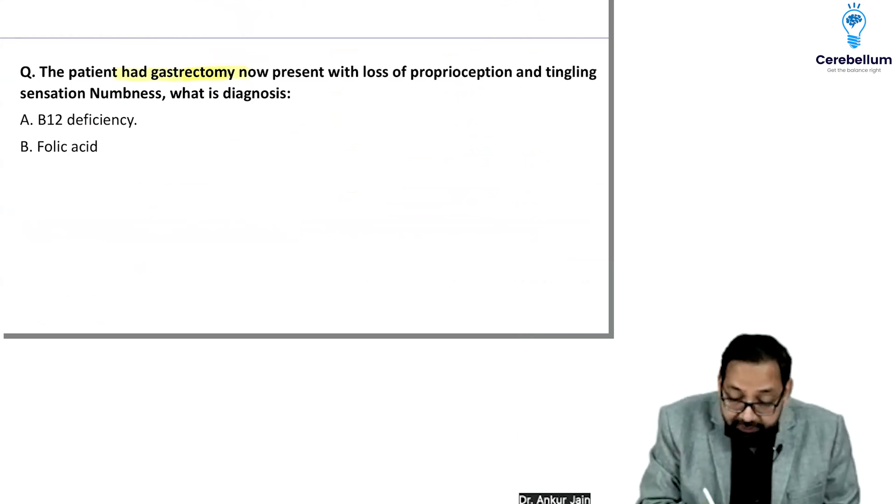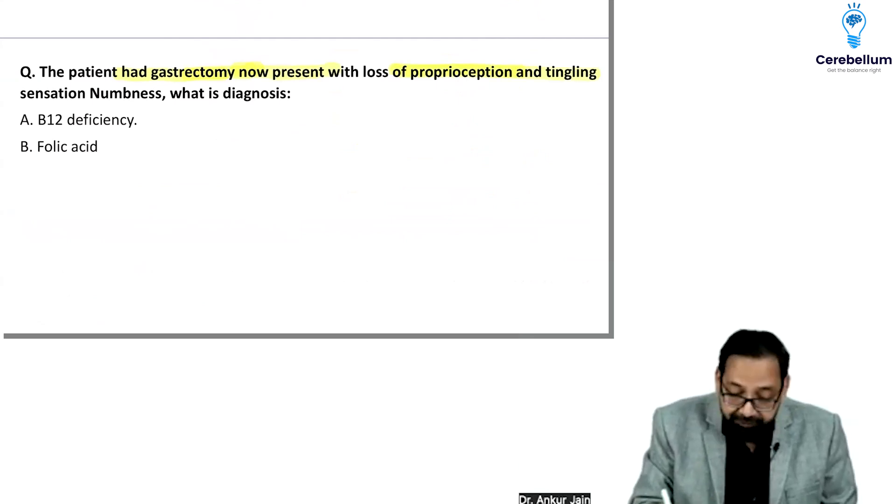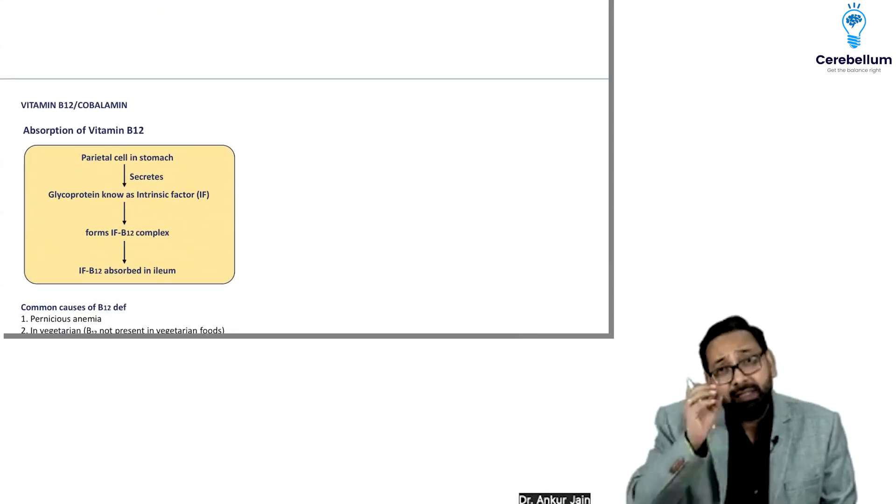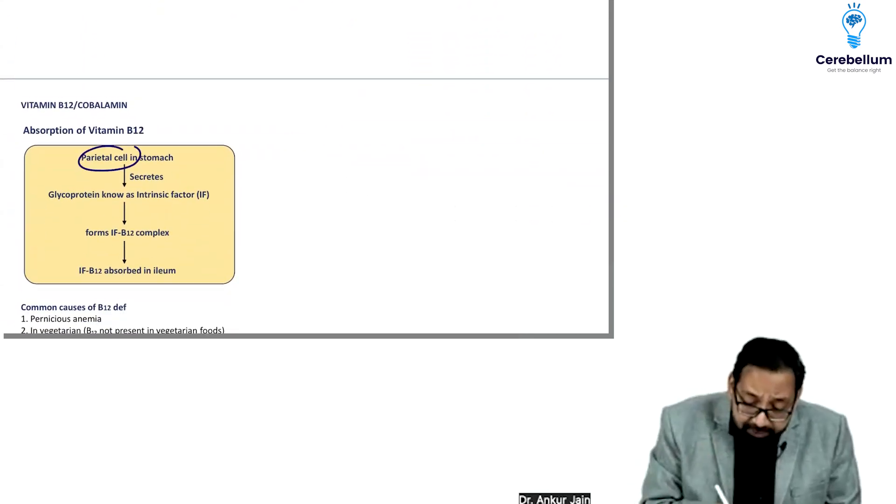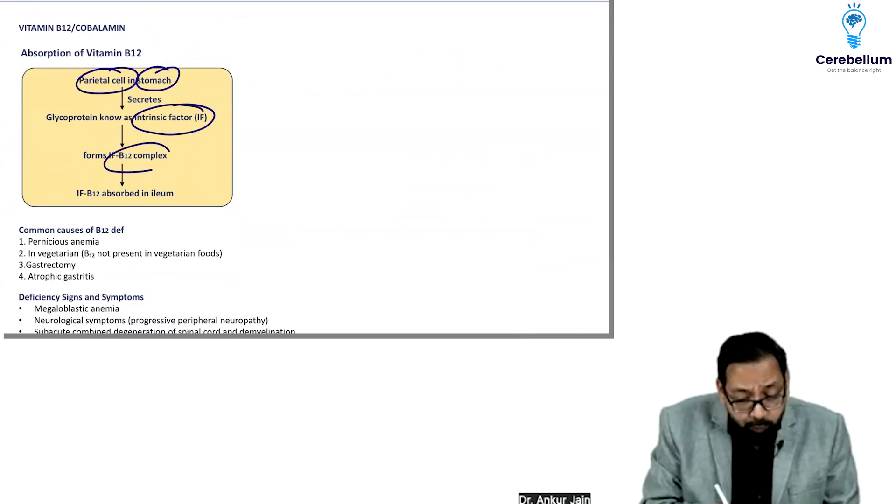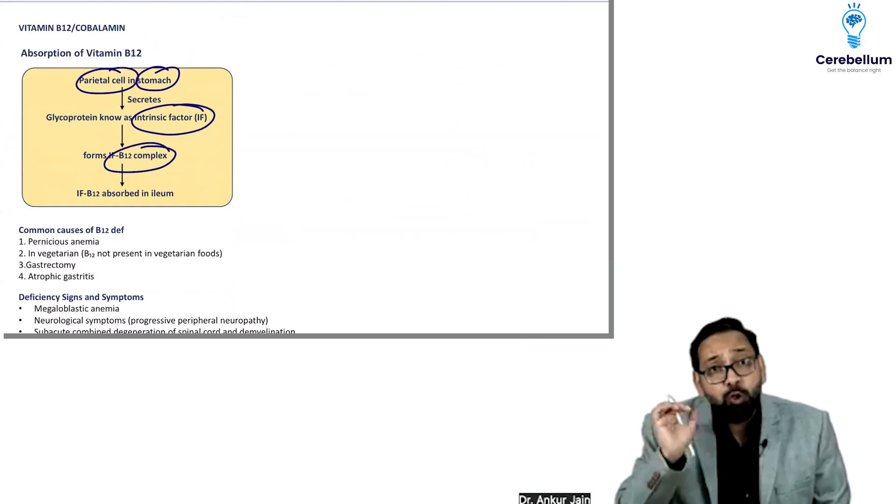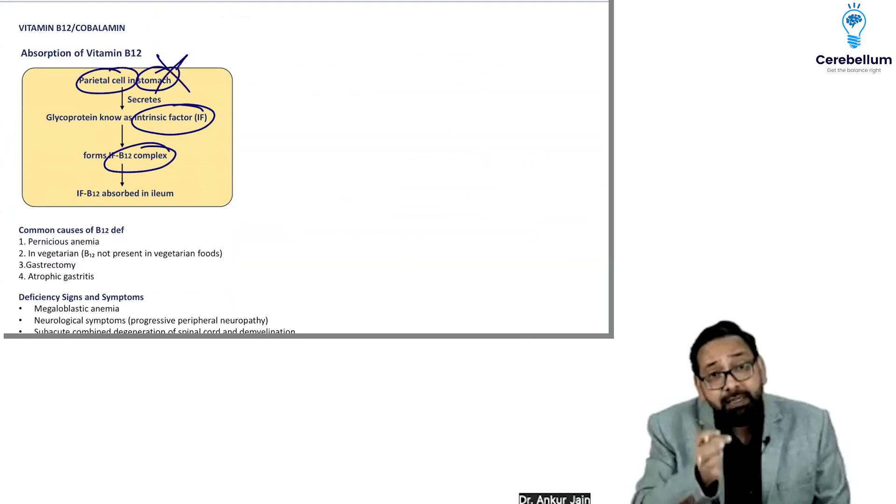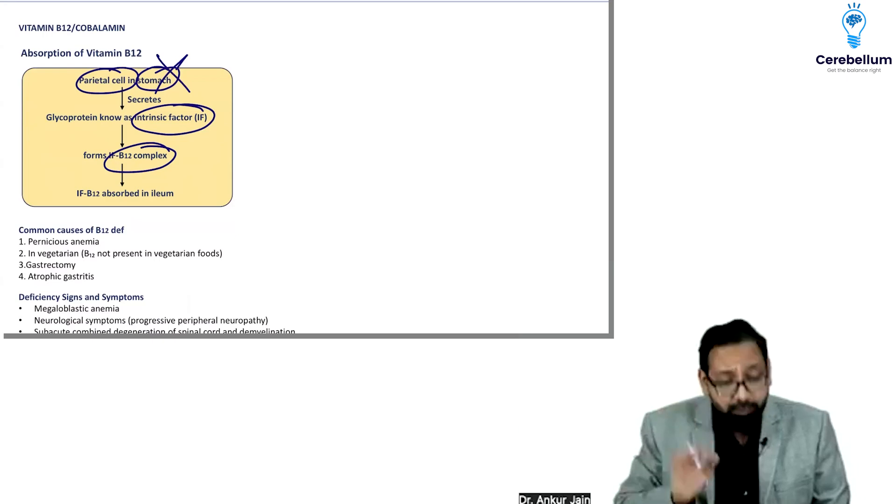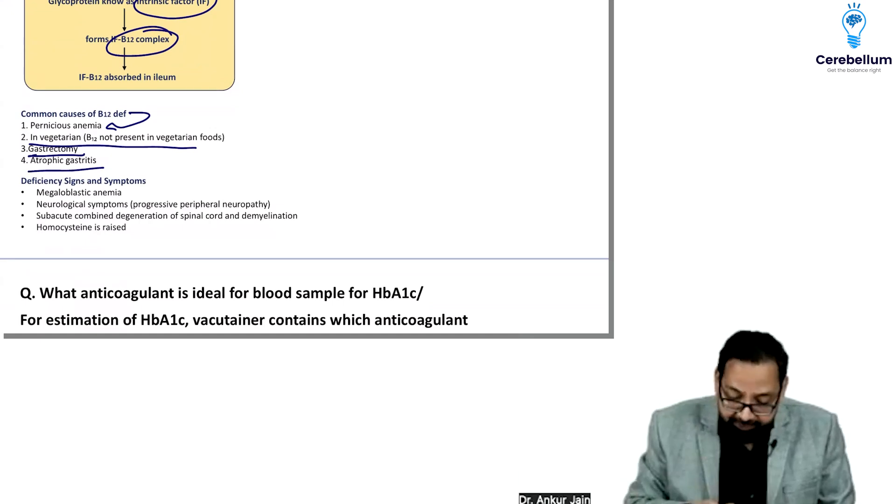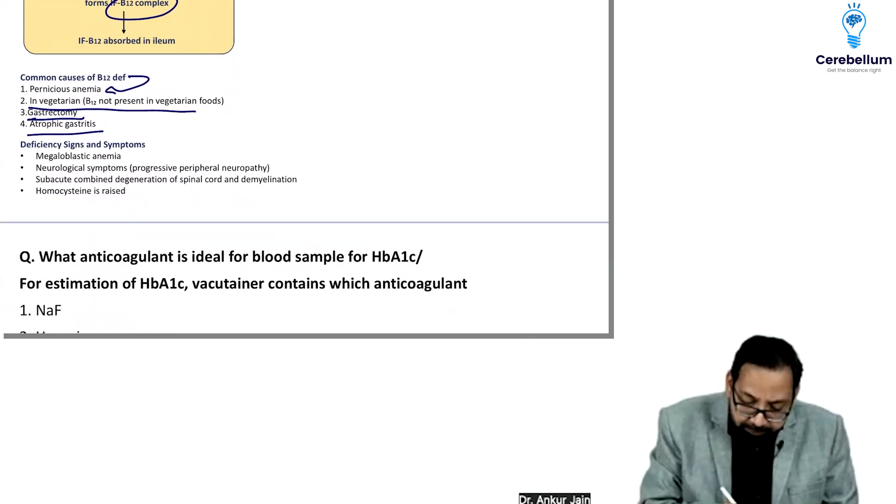Medicine question: gastectomy leads to loss of proprioception, tingling sensation, Romberg test positive - B12 deficiency. Previously asked question. Stomach parietal cells secrete intrinsic factor which binds to B12 to form intrinsic factor-B12 complex, and that's how B12 is absorbed. If gastectomy is done, intrinsic factor won't be there, so B12 deficiency is common.